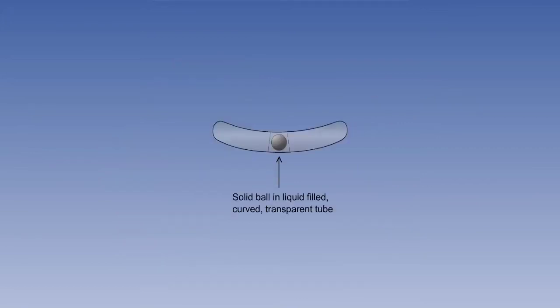A properly executed turn will be a balanced turn where the angle of bank is correct for the true airspeed and rate of turn. The slip indicator gives a direct indication of the state of balance of the turn. The most common version of the slip indicator consists of a solid ball in a liquid-filled, curved, transparent tube.